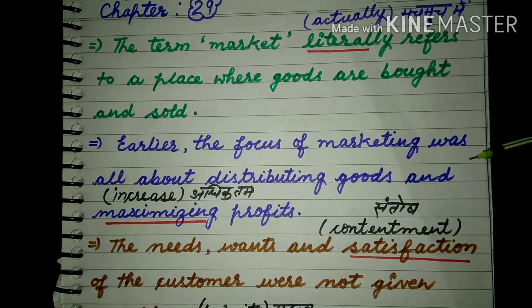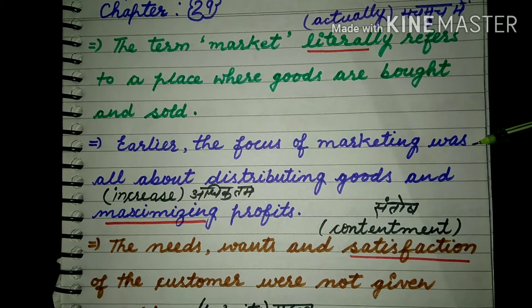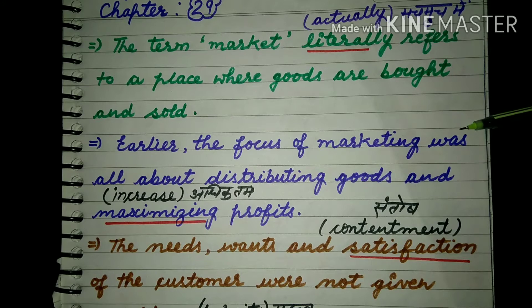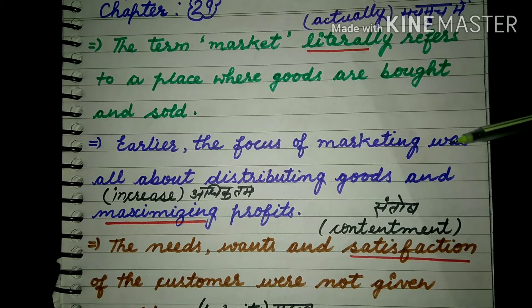Earlier, the focus of marketing was all about distributing goods and maximizing profits. पहले जो market का focus होता था, वो distributing goods के बारे में होता था — कि जितना भी माल है उसकी distribution कैसे होगी। And maximizing profit यानि profit को increase करना — जो दुकानदार हैं, buyers हैं, वो अधिकतम profit लेते थे।